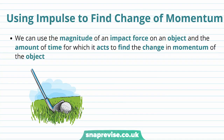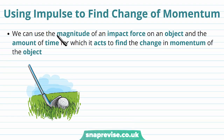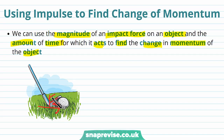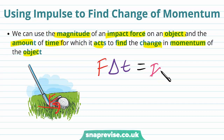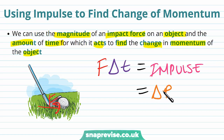Finally, we can see how to use impulse to find the change of momentum. We've seen how to use it to find impact force, but we can also use it to find change in momentum. We can use the magnitude of an impact force on an object and the amount of time for which it acts to find the change in momentum. Going back to our example of hitting a golf ball with a force F, we know F times delta t equals the impulse, and impulse equals change in momentum delta p. So we can use impulse to find the change in momentum.